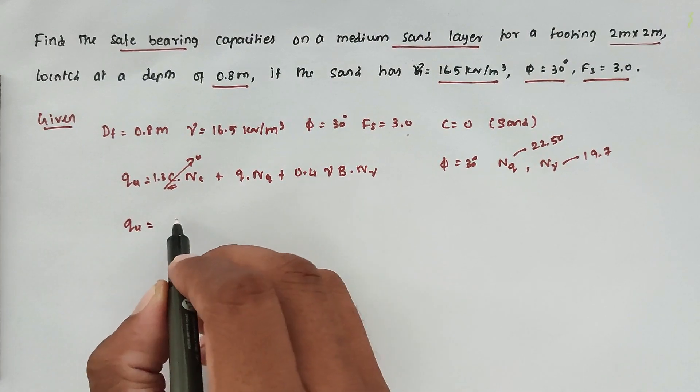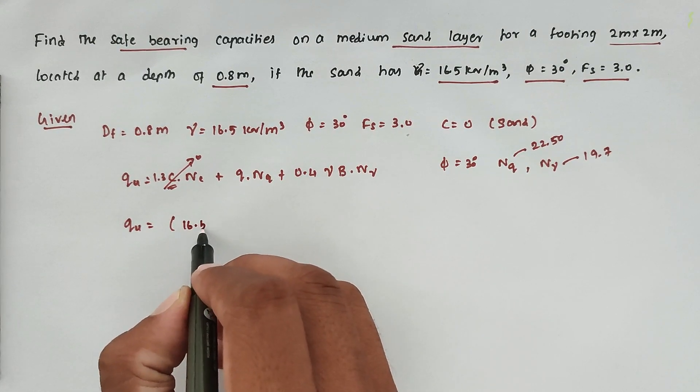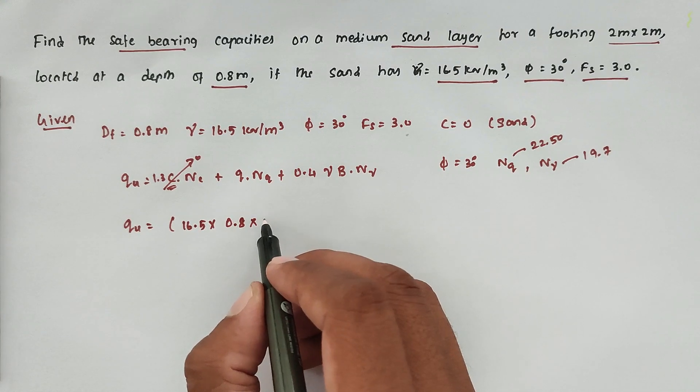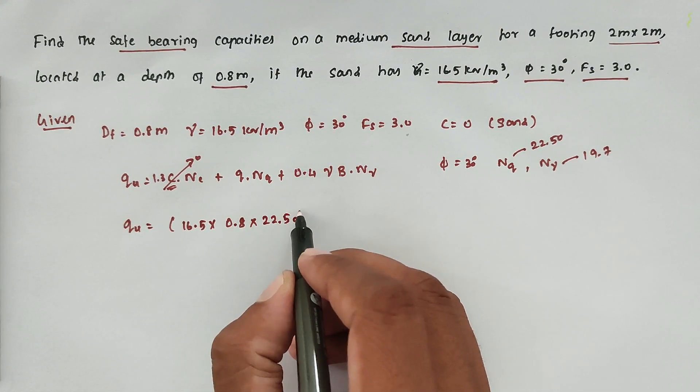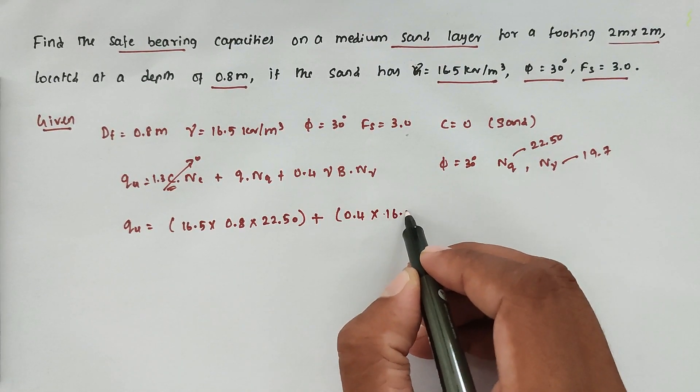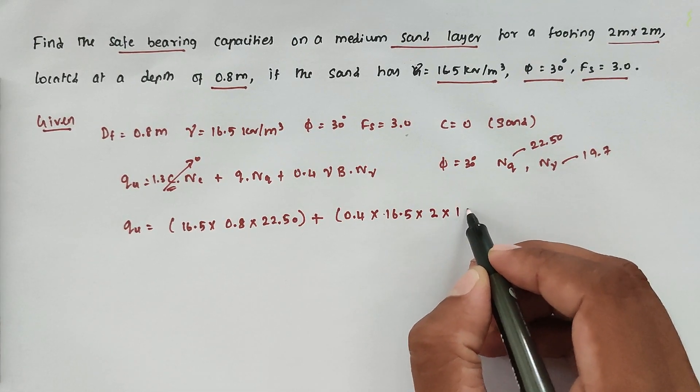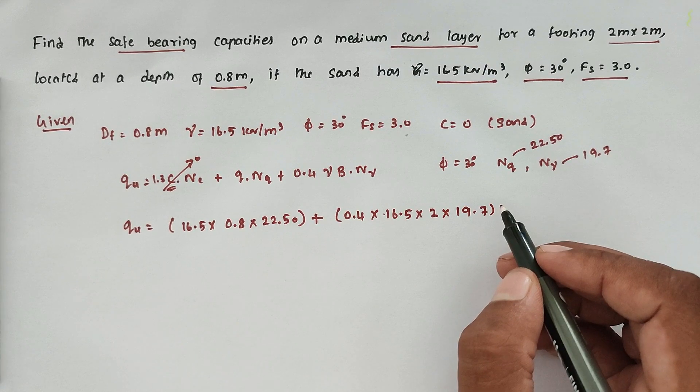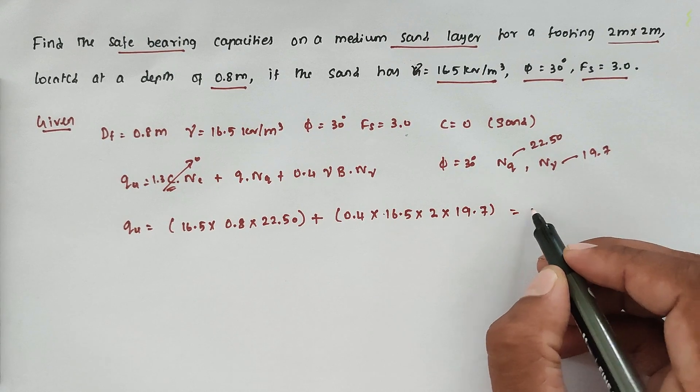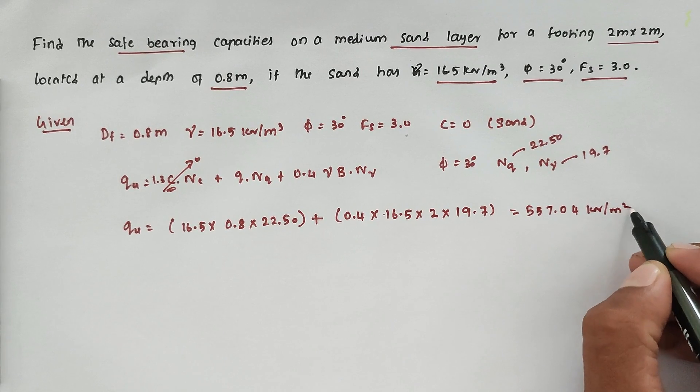Now qu equals, so the q value is γ·Df. So the γ value is 16.5 × depth of foundation 0.8 × Nq value 22.50, plus 0.4 × γ value again 16.5 × b value 2 meter × Nγ value 19.7. Solving this we get the value 557.04 kN/m².